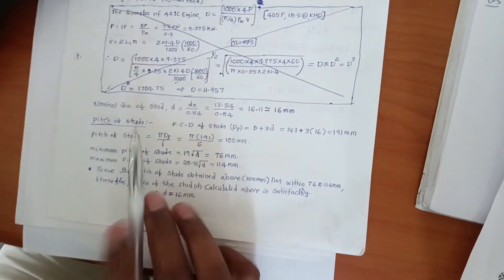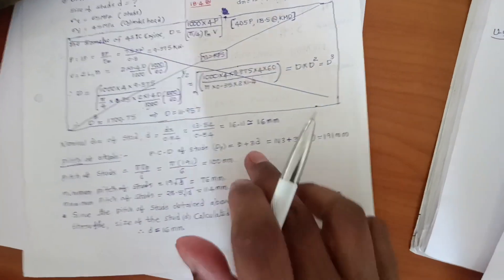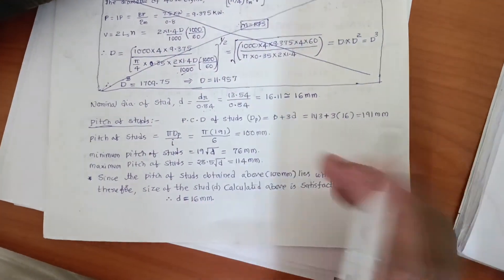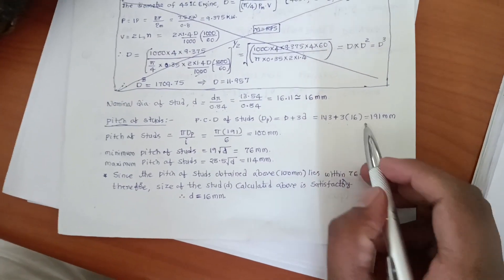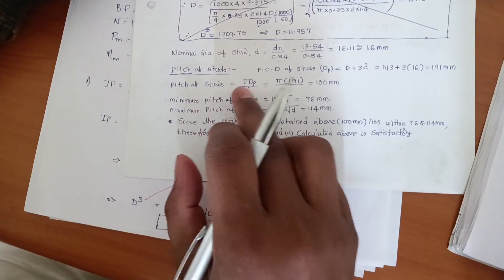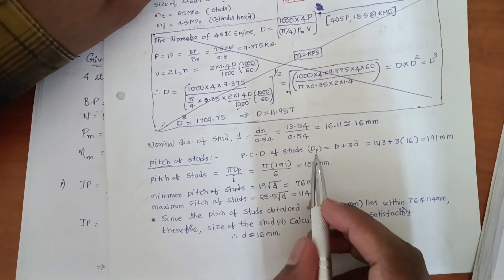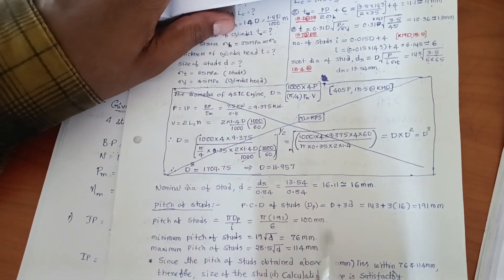We also need to find the pitch circle diameter of the studs. The formula is D_P equals D plus 3d, where D is the cylinder bore (143 mm) and d is the nominal stud diameter (16 mm). This gives the pitch circle diameter D_P. The pitch of the studs is then calculated as: pitch equals π × D_P divided by i (number of studs), giving approximately 100 mm.